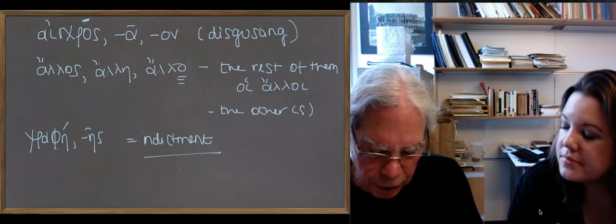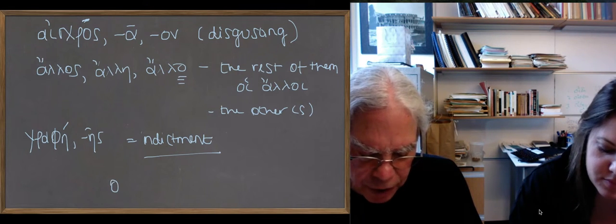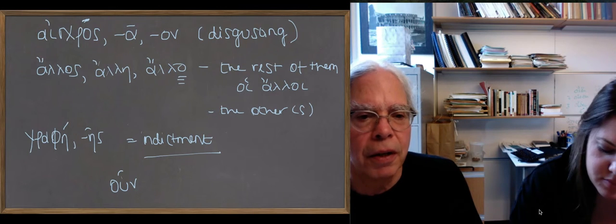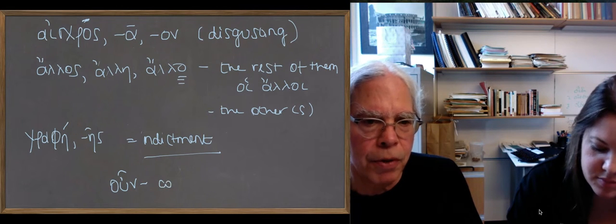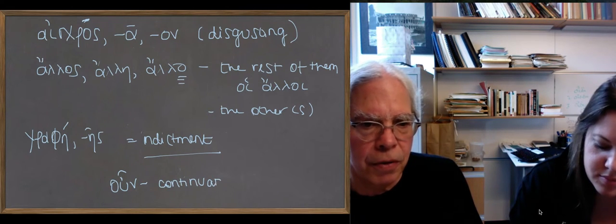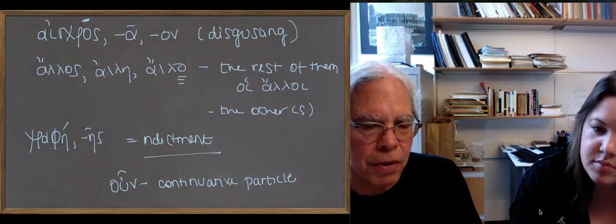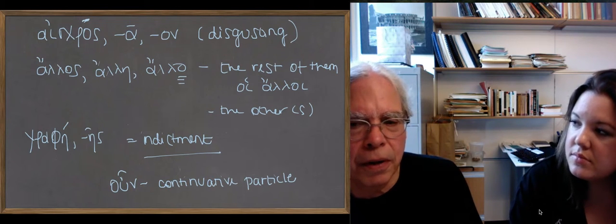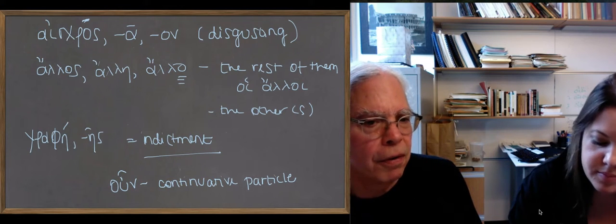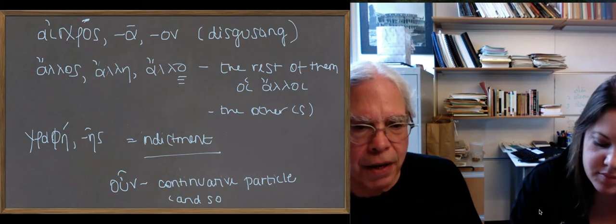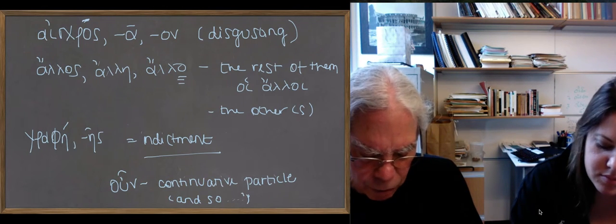There's a new particle, and it's a great one, a really common one in Greek. It's oun, O-U with a circumflex, N, and no H. And the book translates it then or therefore. It's a continuative particle. In other words, what it means is that the sentence which is starting continues logically and otherwise along the same lines as the previous one. So I think a better translation of it is, and so, rather than then, which is what the book gives you, or therefore.